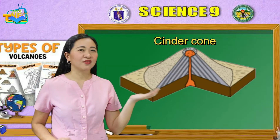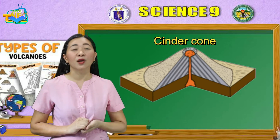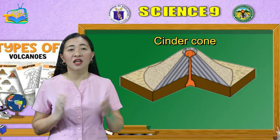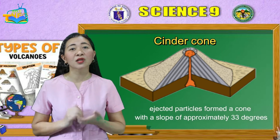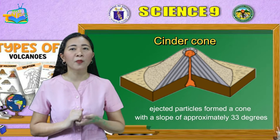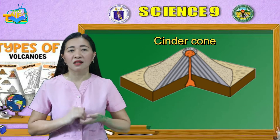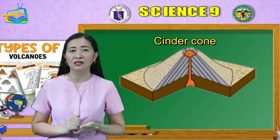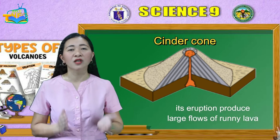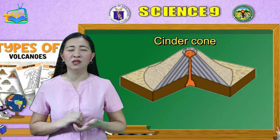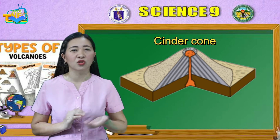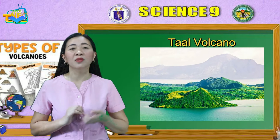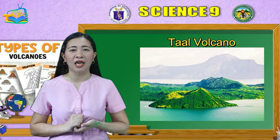Second is the cinder cone. Cinder cones are volcanoes formed from loose rock fragments ejected from a central vent. The ejected particles land near the vent, forming a cone with a slope of approximately 33 degrees. The lava flows from a single vent, and once the bulk of gases have been released, the eruptions begin to produce large flows of runny lava. These flows typically emerge from fissures at the base of the volcano or breaches of the crater wall. Taal in Batangas is an example of a cinder cone volcano.